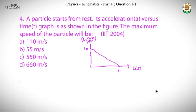We proceed to an IIT JEE 2004 question. The graph is given and the question is: a particle starts from rest, its acceleration vector versus time graph is shown in the figure. We have to find the maximum speed of the particle. There are four options.